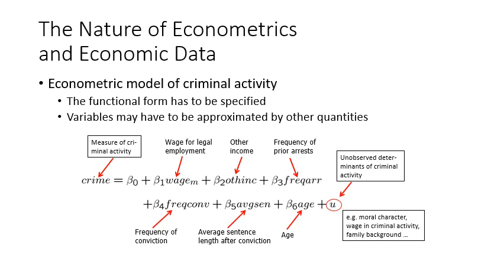Finally, we have the letter U. We call this the unobserved determinants of criminal activities — sometimes called the error term or residual. This could include data excluded from the relationship but that could still affect it. For example, it could include moral character — how the morality of a person could affect his attitude toward criminal activities, which we cannot measure. Also, wages from criminal activities are hidden and not easy to obtain.